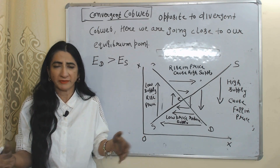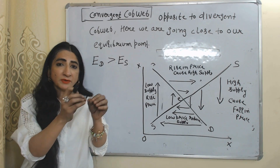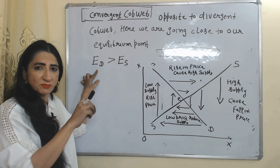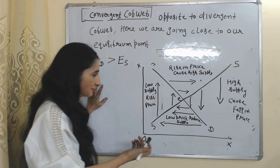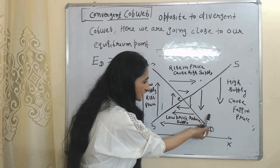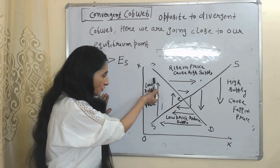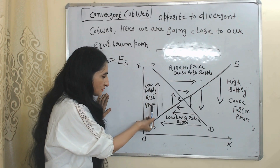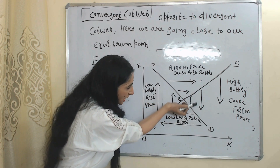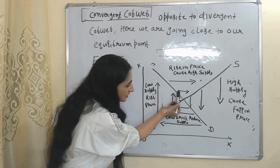Now we are going to discuss the convergent cobweb, which is just the opposite of the divergent cobweb. Here we converge toward our equilibrium point — we come close to it — because elasticity of demand is more than the elasticity of supply. We start from a point: high supply causes falling price, so we move here. Low price reduces supply, then we move up. Low supply causes a rise in price, then we move here. Rising price leads to high supply, then we move down.